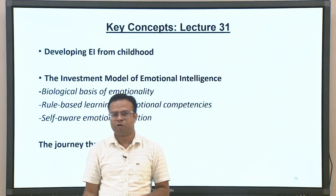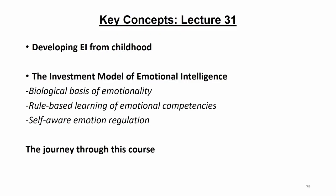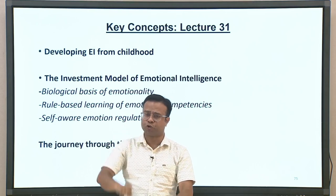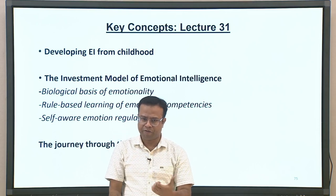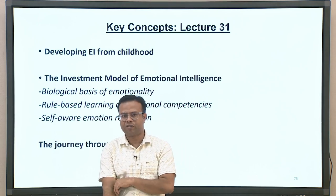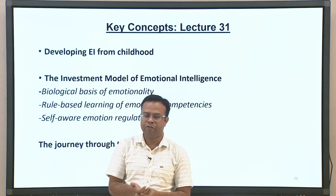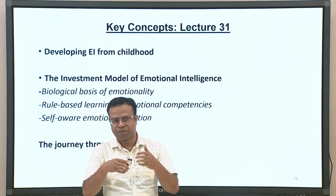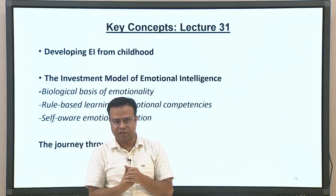Today we will discuss the concept of development of emotional intelligence and how it develops from childhood to adulthood. In that context, we will look at one particular model called the investment model of emotional intelligence. We will examine three major factors that explain individual differences in emotional intelligence: biological factors, rule-based learning, and self-aware emotion regulation. At the end, we will briefly summarize the journey of this whole course.